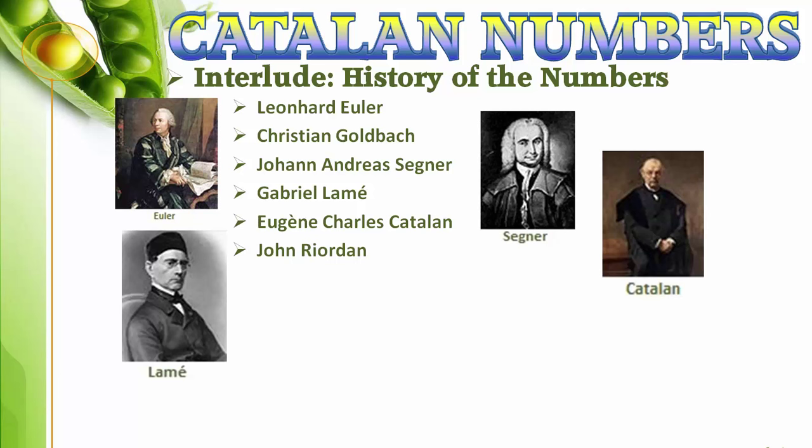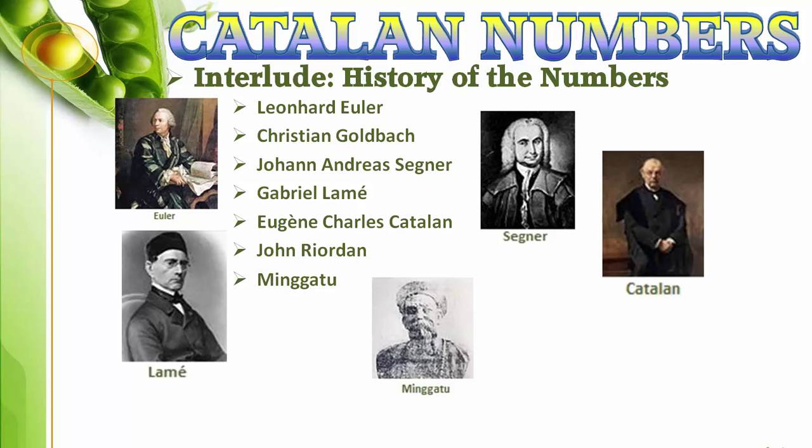This is yet another unfortunate illustration of Stigler's law of eponymy, which states that no mathematical or scientific discovery is ever named after its original discoverer. In fact, even Euler was not the first person to discover the Catalan numbers. That distinction belongs to the Mongolian mathematician Mingatou, whose book, Quick Methods for Accurate Values of Circle Segments, written in the 1730s, included some trigonometric identities and power series involving Catalan numbers, and a recurrence relation for the Catalan numbers.